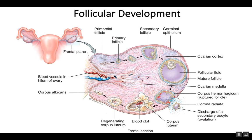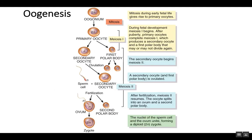So when we refer to follicular development, we mean this maturation of follicles through these different stages until eventually the follicle degenerates and becomes a little scar. In the next video, we'll look at the process of meiosis inside of the ovary, which we call oogenesis.